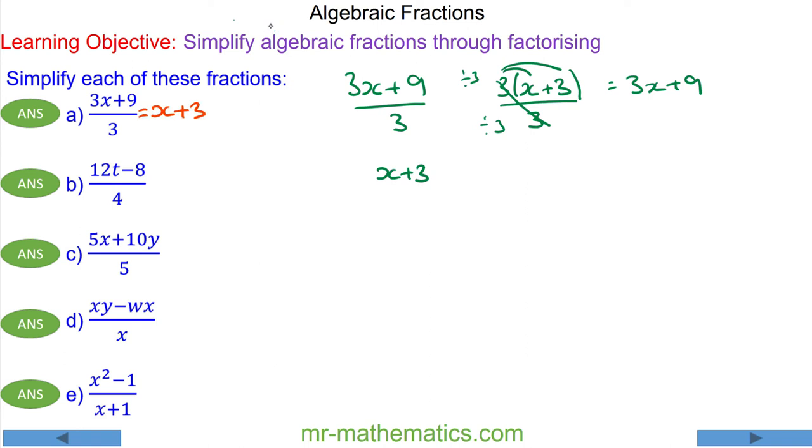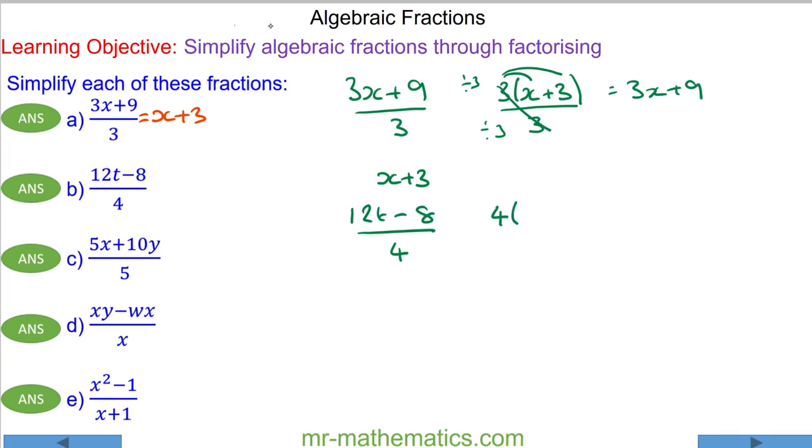For question b we have 12t minus 8 over 4. 4 is the highest common factor of 12t and negative 8. So 4 goes into 12t 3t times and into negative 8 negative 2 times. And again we can simplify this fraction by dividing the numerator and denominator by 4, so we have 3t minus 2.